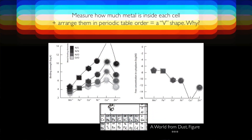Here's a graph that shows what that means. If you measure how much of each metal is inside each cell and arrange them by periodic table order — manganese through zinc, in the middle of your table — there's a lot of manganese and iron, less of the others, and then down here with copper, there's hardly any floating around inside the cell. It makes this V shape.